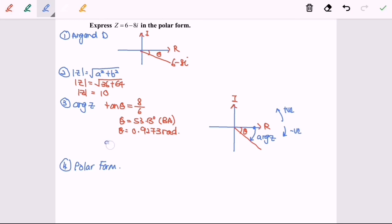So for this case, the argument of z is equal to negative 0.9273 radian because it is clockwise.